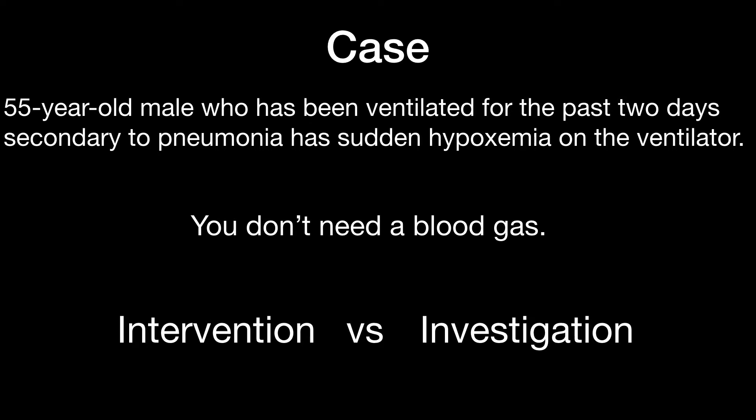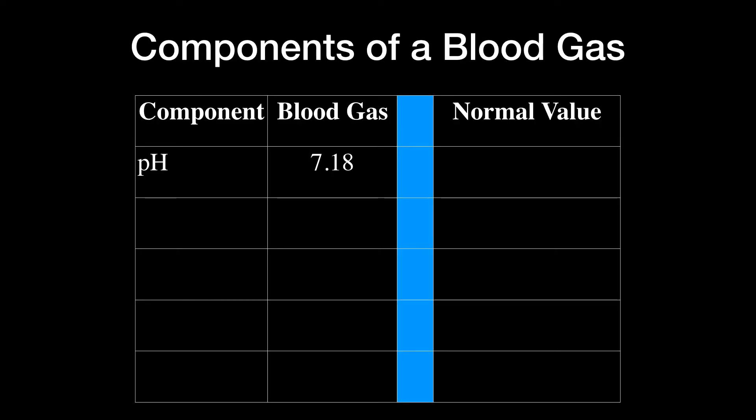Let's now look at a blood gas. 7.18-30-92-16. It's okay if these numbers don't mean anything to you right now, but this is often how they're written and reported without actually telling you what the values mean, because we have a shorthand. Let's go through each one in detail. A component of a blood gas includes the pH, and in this case it's 7.18. The normal value for a pH is 7.35 to 7.45, give or take.